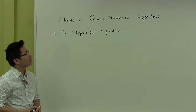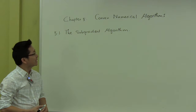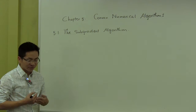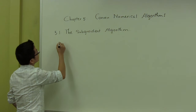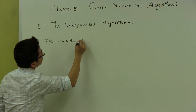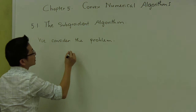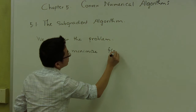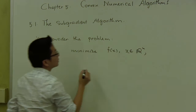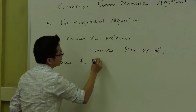In today's lecture, I'm going to move to chapter 5 on numerical algorithms for solving convex optimization problems. In the first section, I'm going to present the subgradient algorithm for solving convex optimization problems. We consider the problem: minimize a function f of x, where x is in R^n, and f is a convex function from R^n to R.